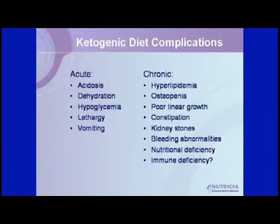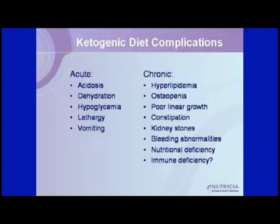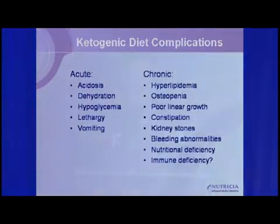Among the acute complications: taking away glucose and making the body use fat can cause children to become acidotic, dehydrated, or have low blood sugar. Associated with those conditions, they can be lethargic and have vomiting. When kids are admitted to start the ketogenic diet, we teach parents and caregivers how to look for, monitor, and treat these things.